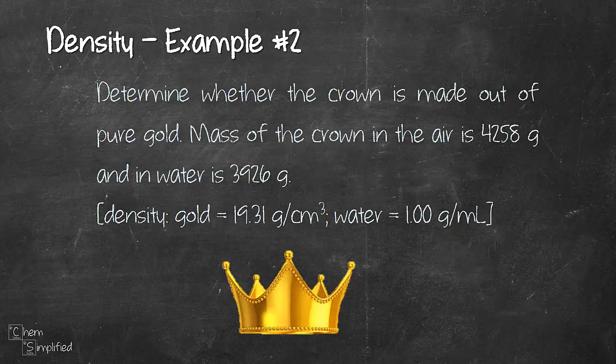So to figure out whether it's pure gold or not, we basically have to figure out the density of the crown and then we compare it with the density of gold. So if we figure out that the density of crown is somewhere near, really close to 19.31, we can conclude that the crown is made out of pure gold, right?